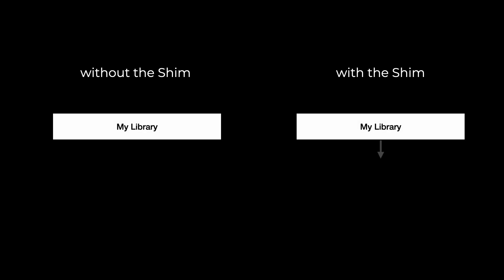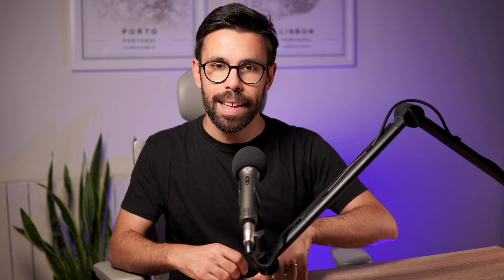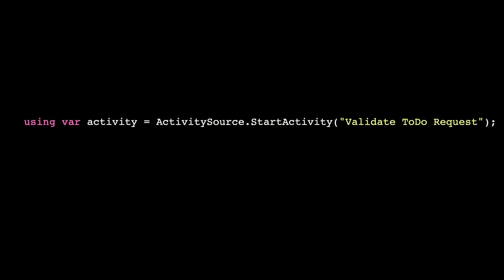Why? By using the shim, you bring an extra dependency, and if you are building something like a library, someone will need to depend on that, and you will impose a dependency on them. Not only that, but if you go online and look for information about OpenTelemetry, you will see that it's more common to see using the ActivitySource than using the tracer from the shim. So unless you have a really good reason to use the shim, make sure you use the ActivitySource.